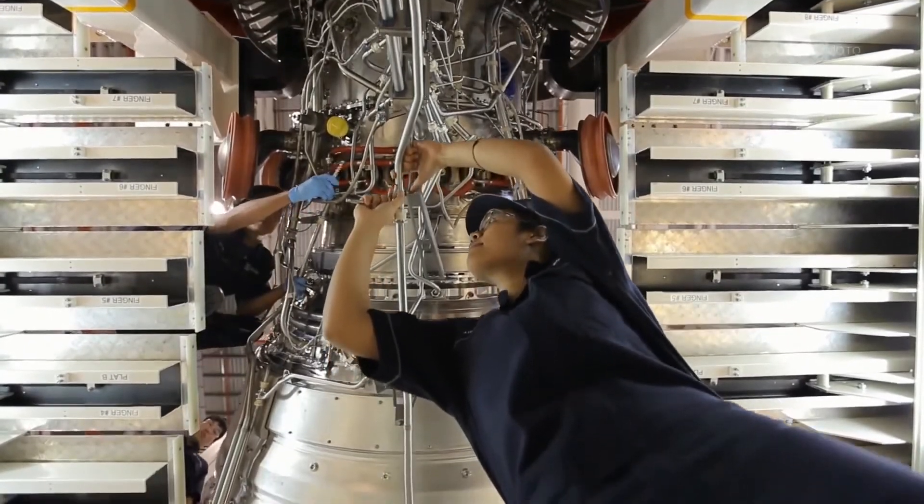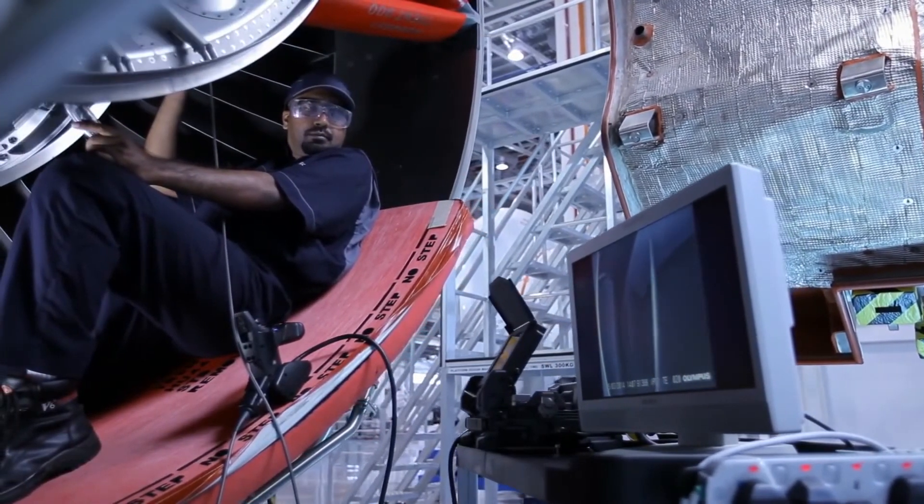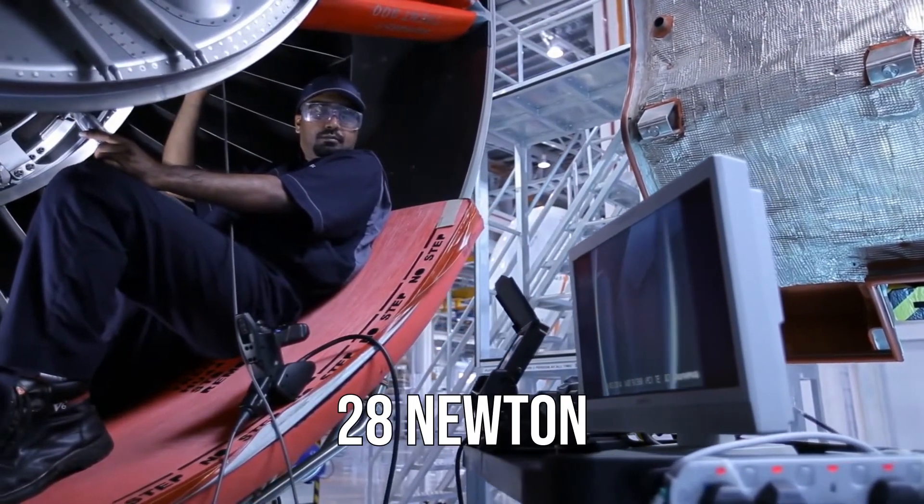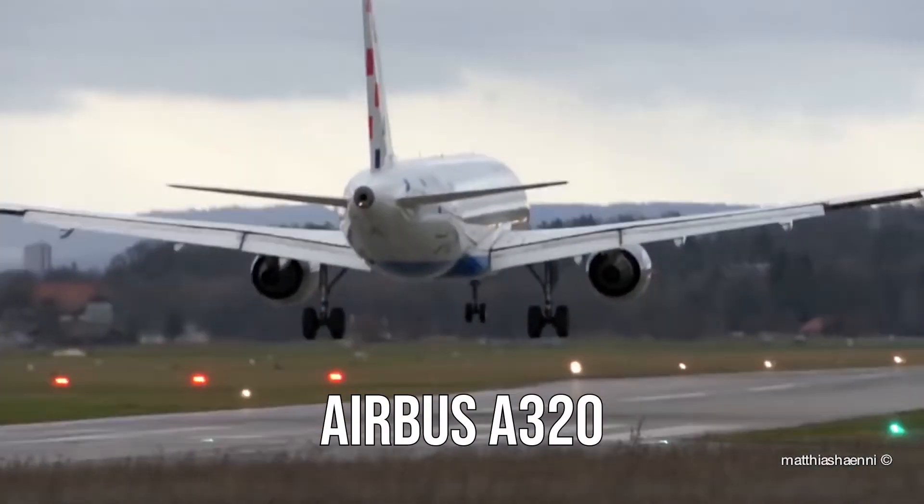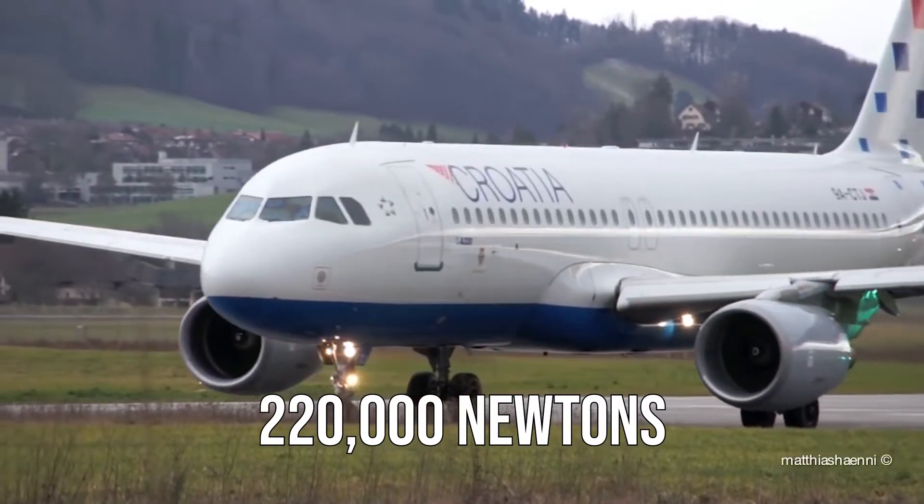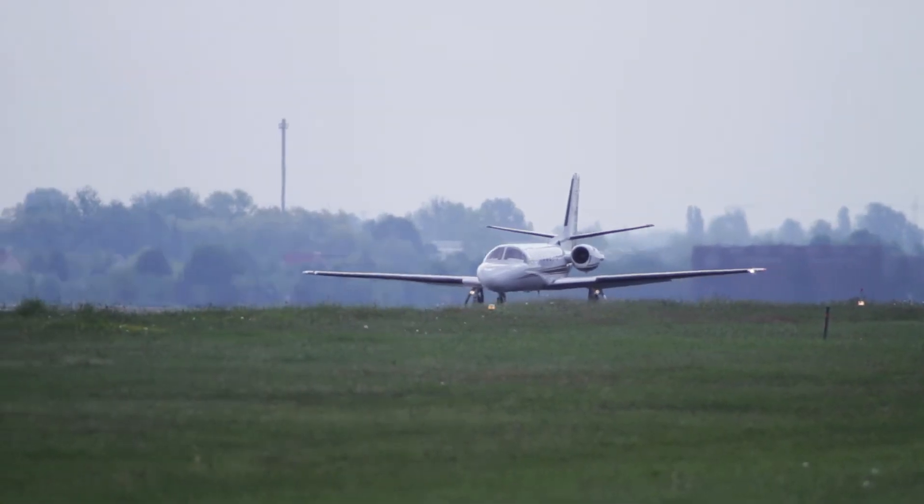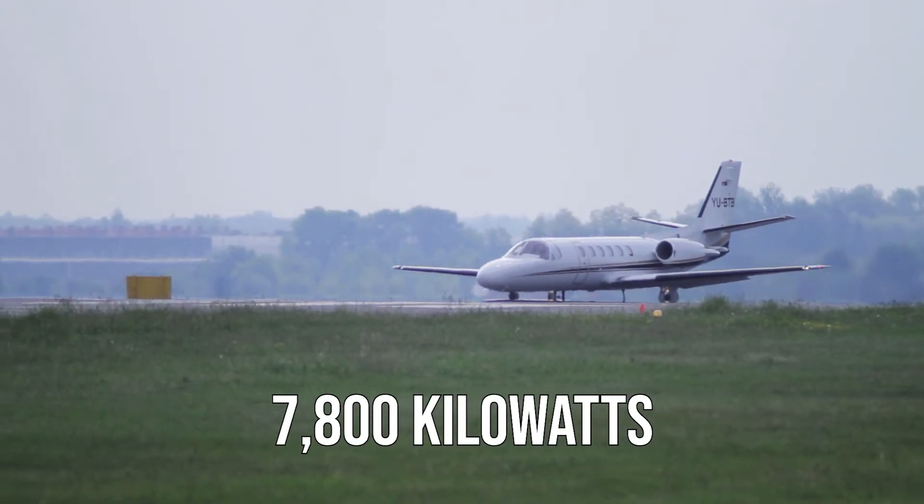The prototype thruster, according to a study released by a scientist at the Wuhan University in China, can create roughly 28 newtons of thrust per kilowatt of power. A typical commercial airliner, such as the Airbus A320, produces a combined thrust of around 220,000 newtons, implying that a tiny jet plane will require almost 7,800 kilowatts to operate.